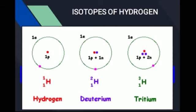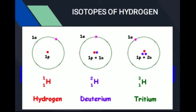Glucose C₆H₁₂O₆ — آپ دیکھیں یہ glucose ہے، sucrose ہے، fructose ہے — جتنے بھی یہ chemical compounds ہیں ان میں جو hydrogen ہے وہ mostly protium ہے۔